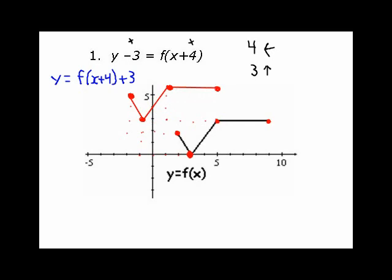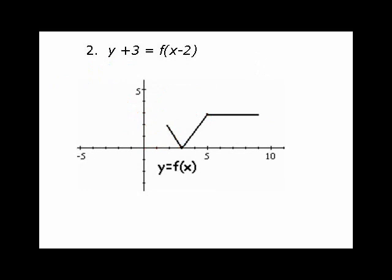On an exam, you're more likely to be given the original and then be asked which of the following represents this new graph. Then here we have y plus 3 is equal to f(x-2). The f(x-2) is moving us over 2 units to the right. 2 to the right, and then the y plus 3 is 3 down. You may or may not decide to isolate the y. That is really your choice. Then do the same thing, and I'm going to do this one fairly rapidly because we've gotten good at it.